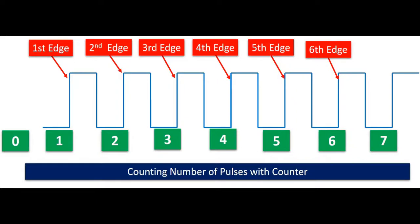We can use a counter to count positive edges of a digital signal and pulses of any digital signal. This figure illustrates the use of a counter for counting pulses. In this figure, the green block shows the counter value and the red block shows the occurrence of rising edges on the PB2 pin of TM4C123 Tiva launchpad. The counter value increments every time a rising edge is detected.